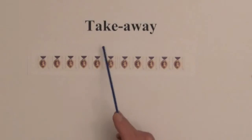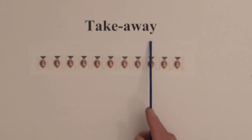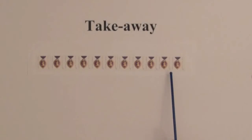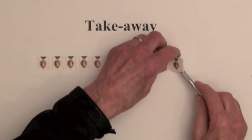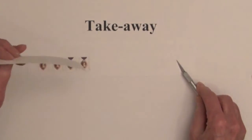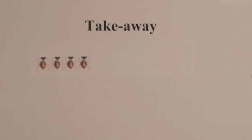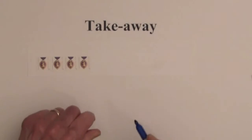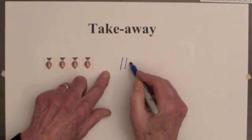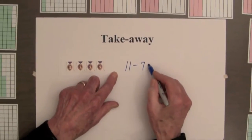The second common use of subtraction is called take-away, where part of an amount is removed. If a person has eleven stamps and uses seven, how many stamps are left? Seven stamps are taken away and four are left. With a take-away example, there is just one amount and some of it is removed. The math used in both examples is the same: eleven minus seven equals four.